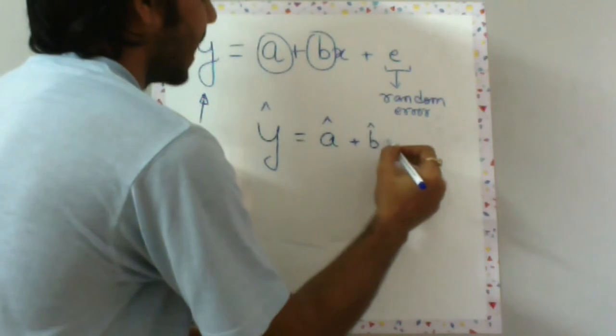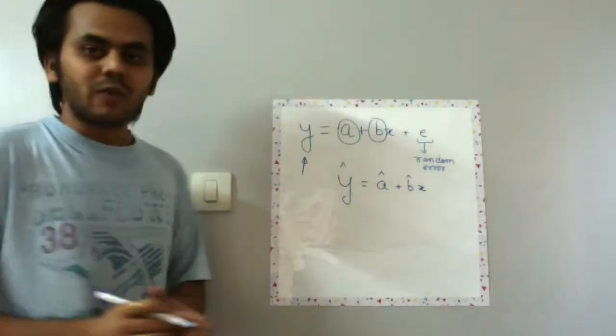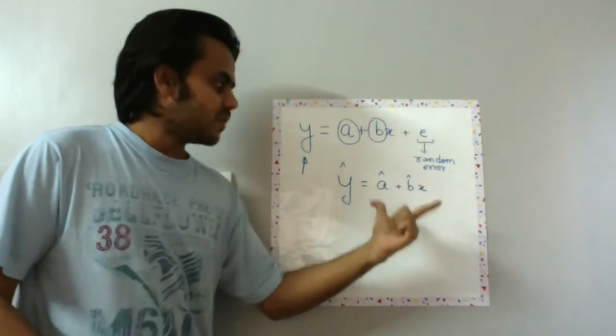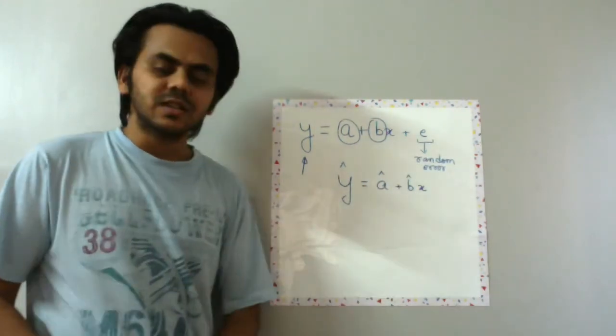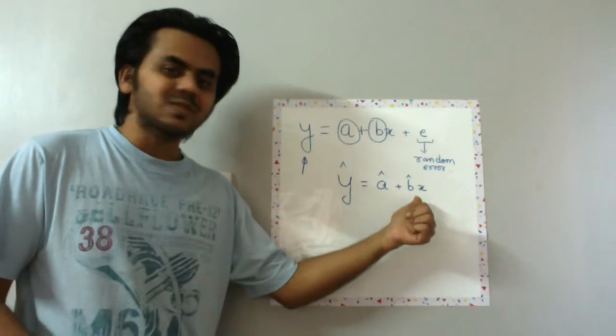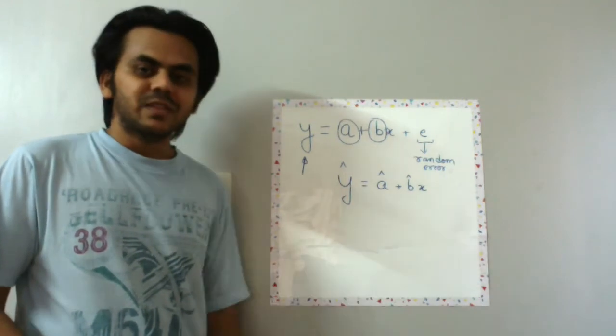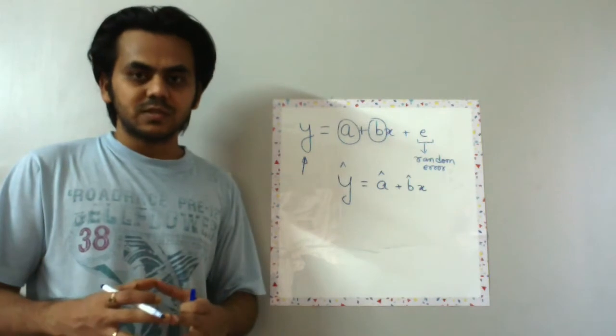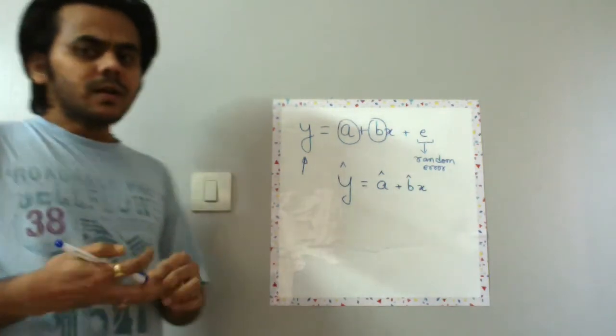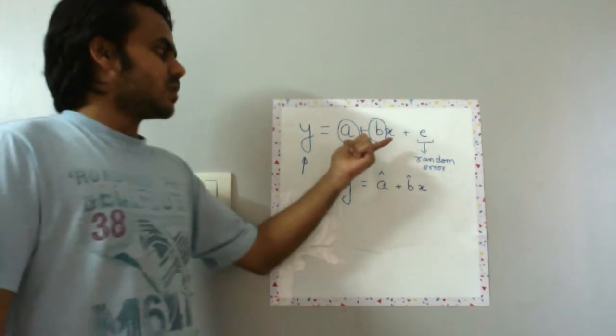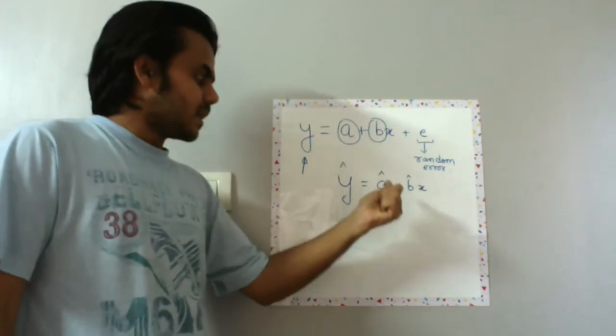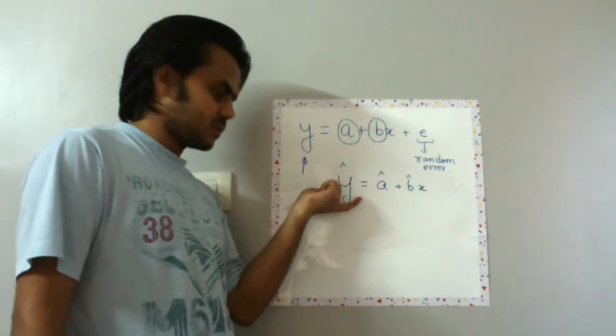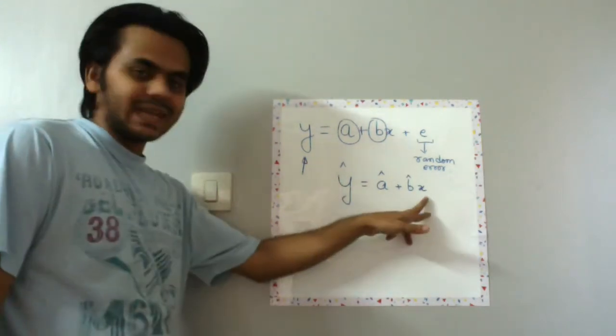Why do we do this? Because we cannot find the random error, so whenever we find this kind of relation, this relation is an approximate one. So even the estimated values of a and b are not the true values, they are estimated values. So we find out a and b and label them as a hat, b hat, and whatever we find out the value of y from x is y hat because it's estimated.